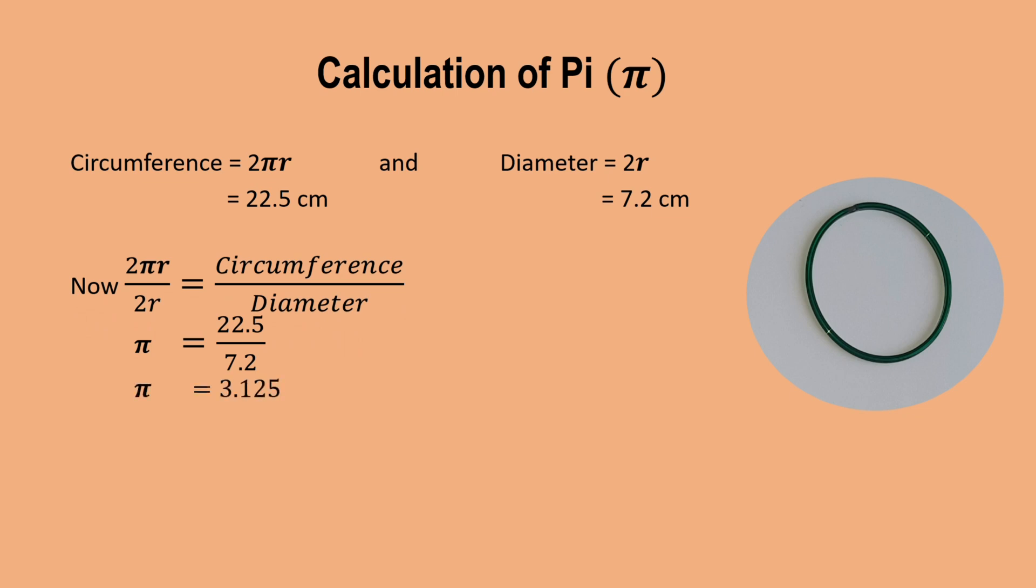By calculation, we are getting pi value as 3.125. But we know that the value of pi is 3.142857. So our approximate value is 3.13. So it is near about the value of 3.14.